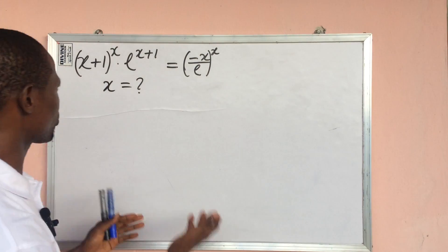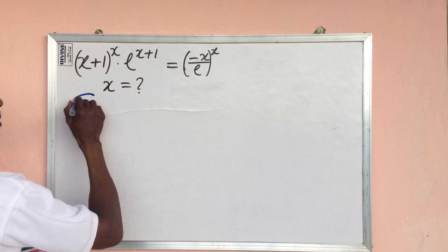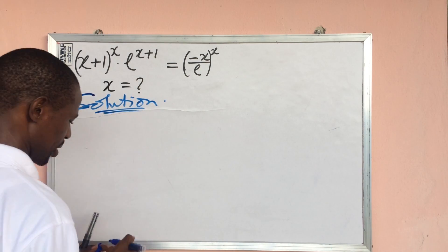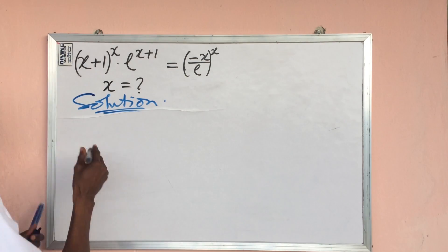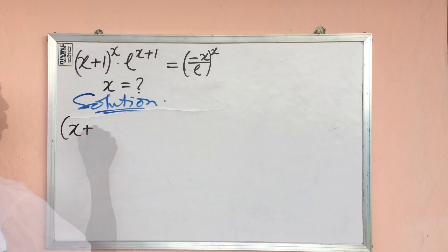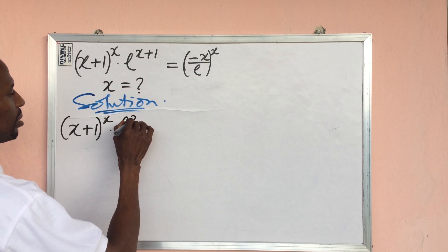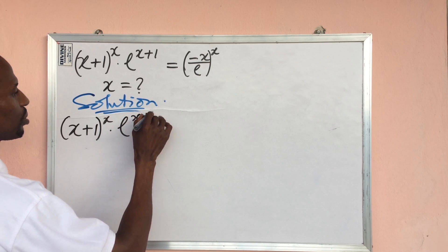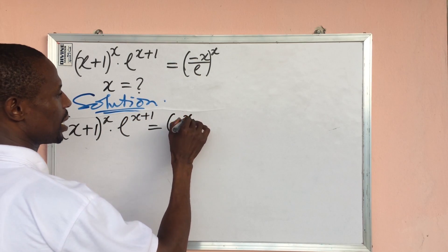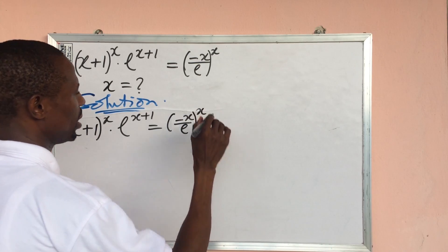Now without much waste of time, let's go into today's challenge. So we put down our question: bracket open x plus 1 close bracket to the power of x, dot e to the power of x plus 1, equal to bracket open minus x all over e close bracket to the power of x.